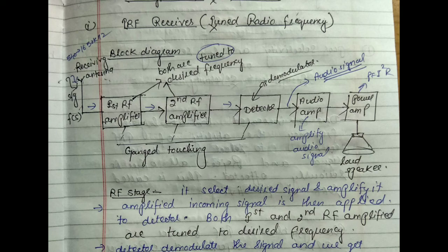The given figure shows the block diagram for the TRF receiver. The TRF receiver consists of two RF amplifiers, one detector, one audio amplifier, and one power amplifier. The RF amplifier is placed between the receiving antenna and the detector.